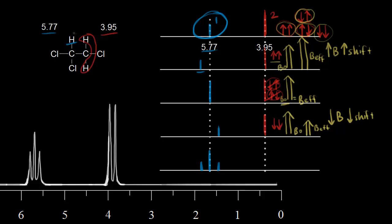Looking at the NMR spectrum, the signal for the proton in blue is split into three peaks — one, two, and three. We call this a triplet.